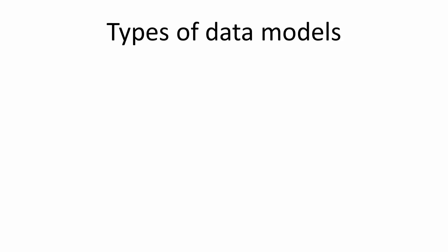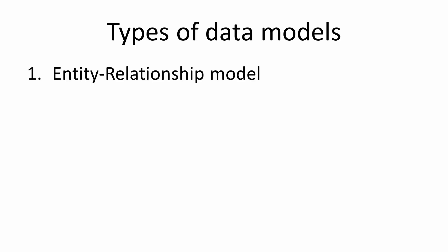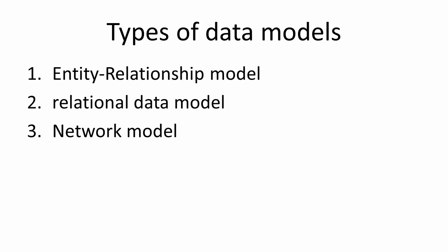Now let's look at the types of data models. The first type is called the entity relationship model, the second is called the relational data model, the third is called the network model, and the fourth is called the hierarchical model. These are the four types of data models.